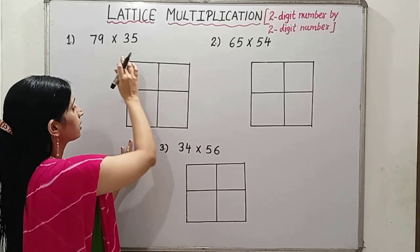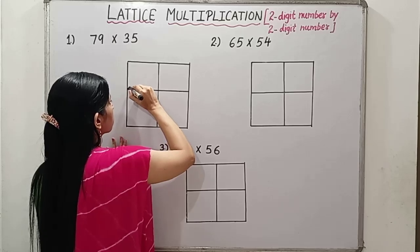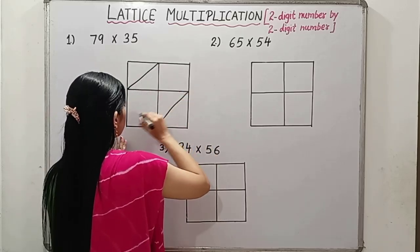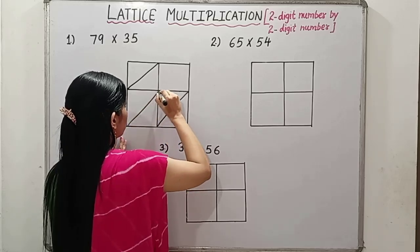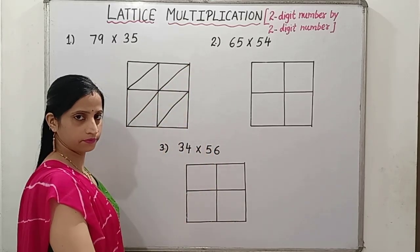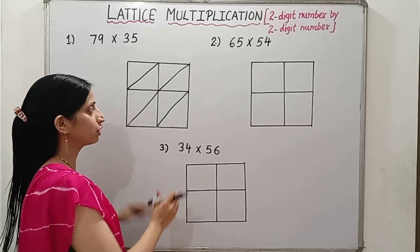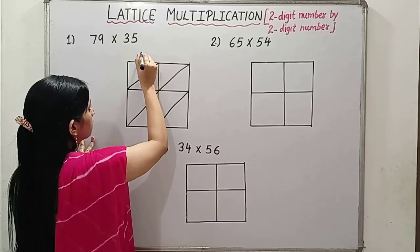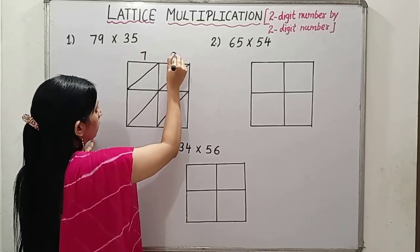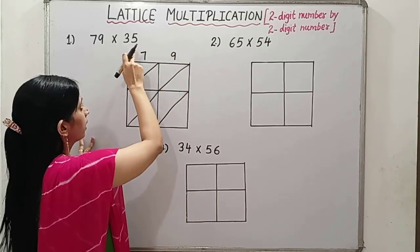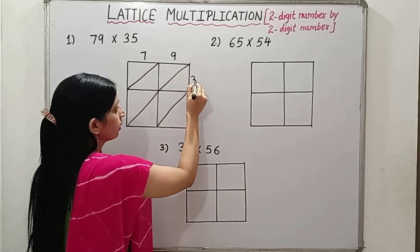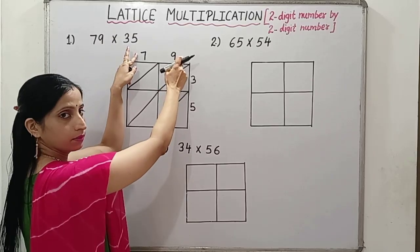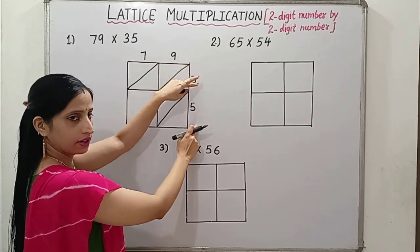Then the next thing, we will draw the diagonals. Like this, we will draw the diagonals of each square. Now what we have to do? It is very simple. Number is 79, so write 7, 9. 35 write on another side of the square. On one side write one number, another side write another given number.